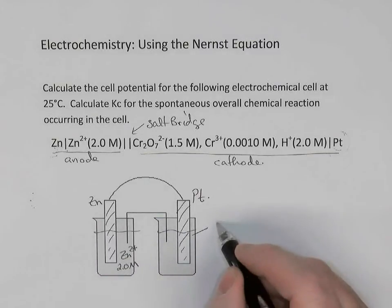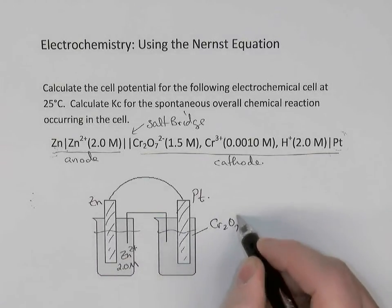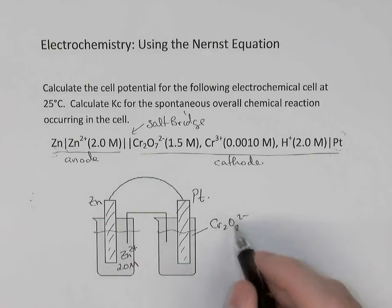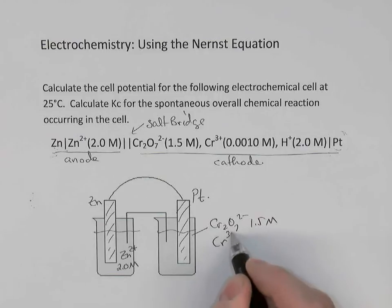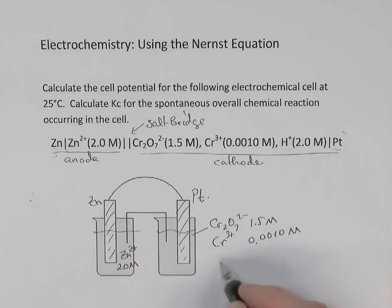Cr2O7 2-, 1.5 molar. There's chromium 3+, 0.0010 molar. And there's acid, H+, 2.0 molar.